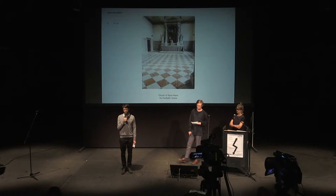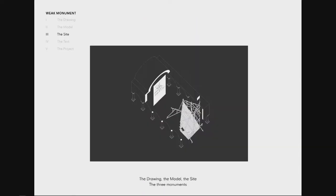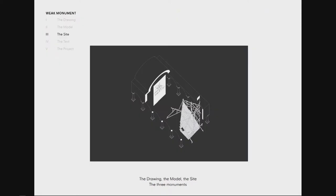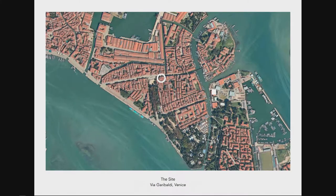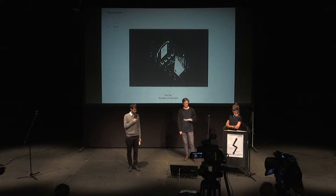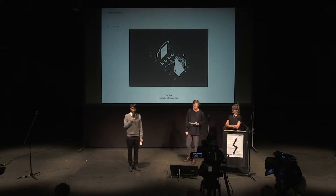From our point of view, a monument is an architectural device which employs memory — it's an explicit expression of power over histories. Memory is the key concept here, and there are three ways memory can be used to create a monument: we have the modern, the classical one, and the weak one. We propose the Church of Santa Maria on the Via Garibaldi as the site. We already exploded the original duality of Tatlin and Lapin by the third element — the church, the site, the classical monument.